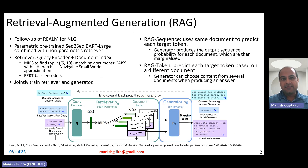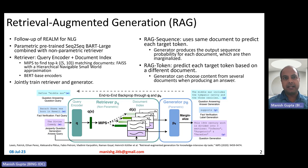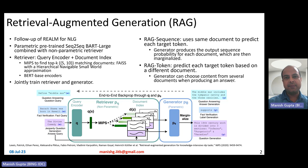In the last video I talked about REALM. REALM was basically a retrieval augmented language model, meant for classification. A follow-up work is RAG — retrieval augmented generation — and as the name says, it's basically a follow-up of REALM but for natural language generation.